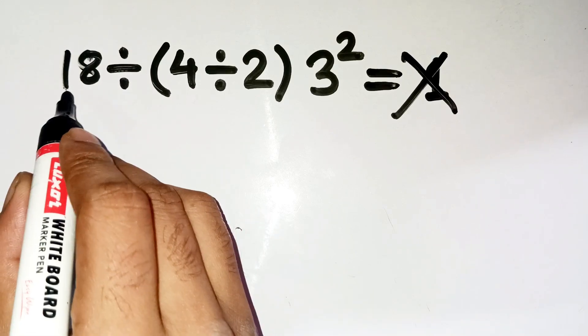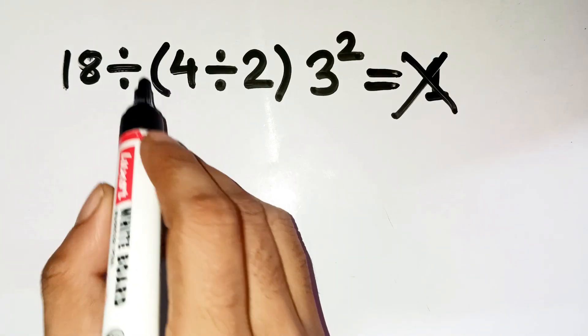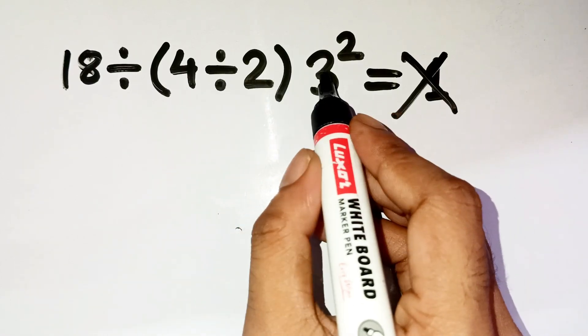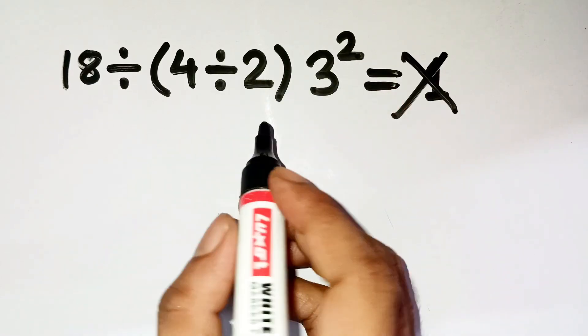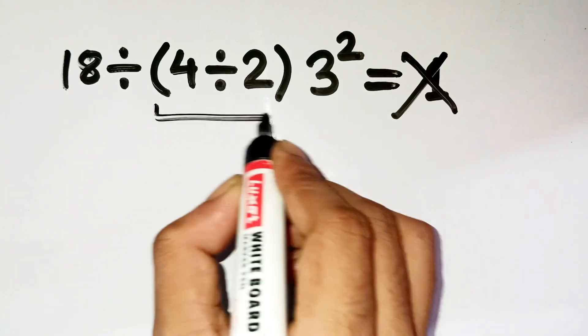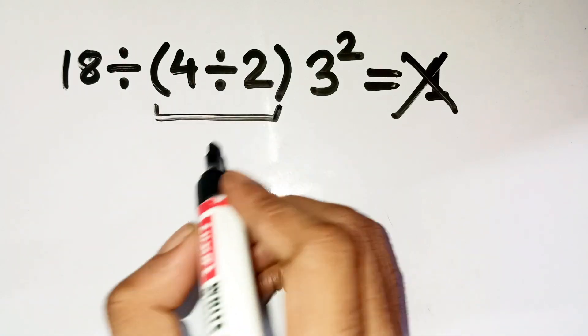The problem is 18 divided by open bracket 4 divided by 2 close bracket times 3 squared. Now, I know exactly what most people do. They look inside the parentheses first. 4 divided by 2, that's 2.